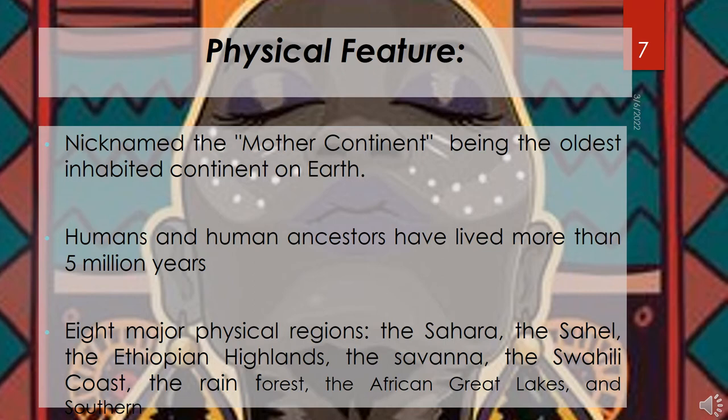Africa has eight major physical regions: the Sahara, the Sahel, the Ethiopian Highlands, and Southern Africa. Some of these regions cover large bands of the continent, such as the Sahara and Sahel, while others are isolated areas, such as the Ethiopian Highlands and the Great Lakes.